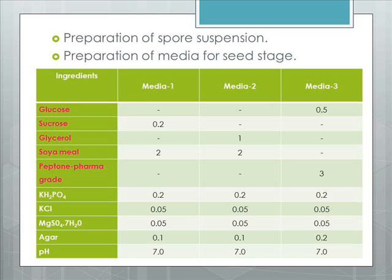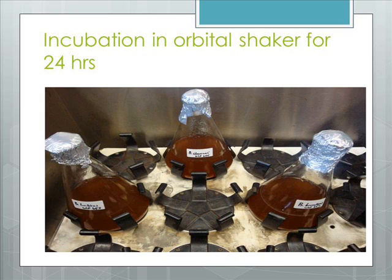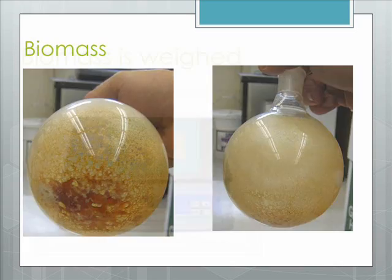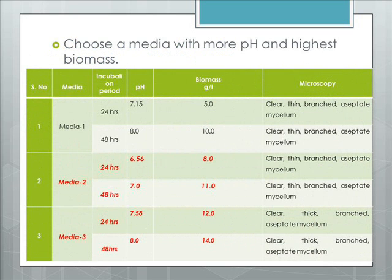We use the spore suspension for the preparation of seed stage media. Three separate medias are chosen at different levels of carbon and nitrogen sources. These medias are incubated for 24 hours in an orbital shaker. pH of each media is checked separately using a digital pH meter. Similarly, biomass is also checked and weighed using a weighing machine. Media with high pH and biomass are selected for the production media under submerged fermentation.